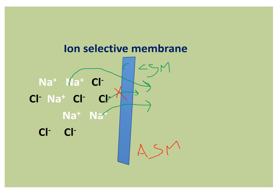Anions like Cl- can pass through the anion selective membrane, while the movement of Na+ ions is not possible through the anion selective membrane. These two types of membranes — cation selective and anion selective — are used in the electro dialysis process along with electricity.